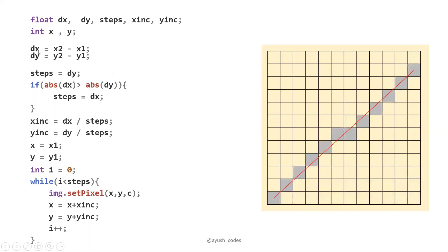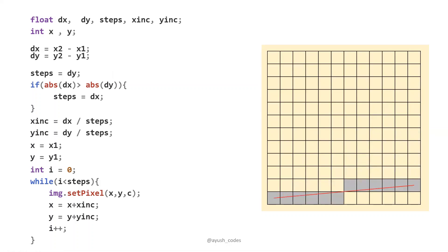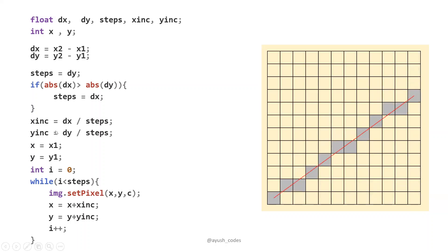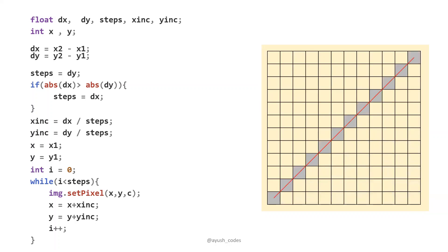Then we calculate dx, which is the difference of x2 and x1. dy is the difference of y2 and y1. Steps is the greater of dx or dy. Then we calculate the increments: x increment is the number of steps by which x will increment, and y increment is the number of steps by which y will increment at each iteration of the loop. Then x and y are set, and inside the while loop we draw pixel by pixel until the line is drawn.